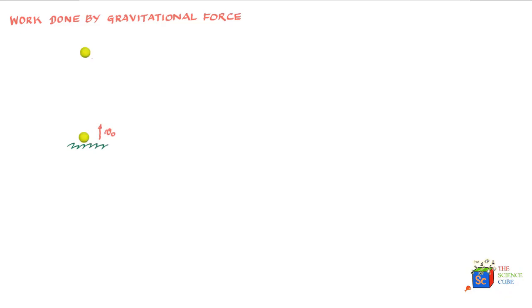To find the magnitude of work done by gravitational force, let's consider a ball lying on the ground projected up with a velocity v naught, so it has kinetic energy half mv naught squared. When it reaches the top of its journey, its velocity becomes zero due to the force of gravity acting continuously in the downward direction, reducing its velocity and taking energy out of the ball — therefore doing negative work on the ball.